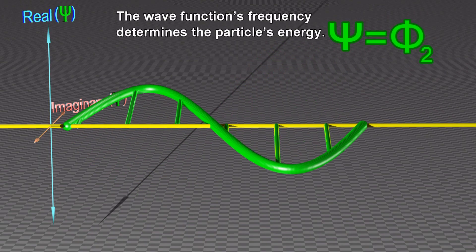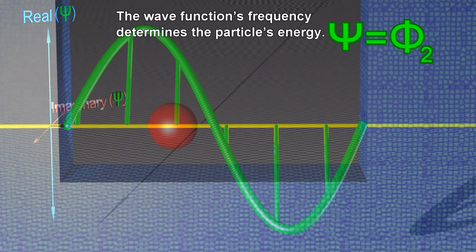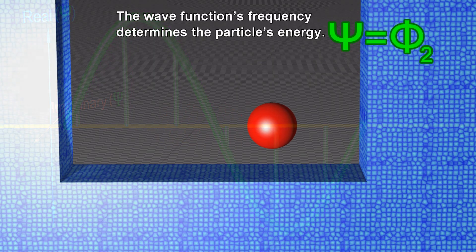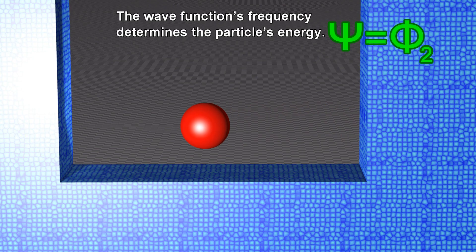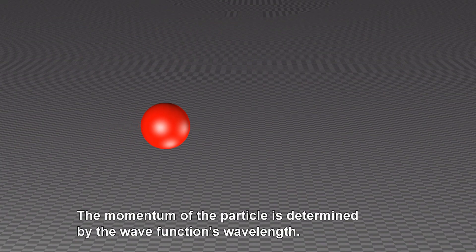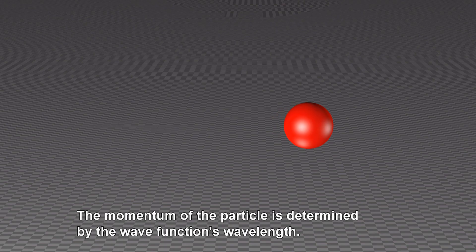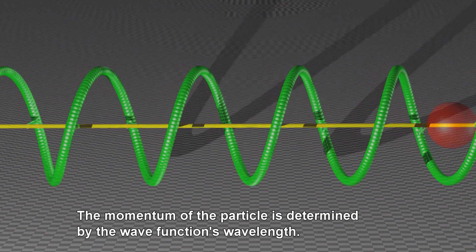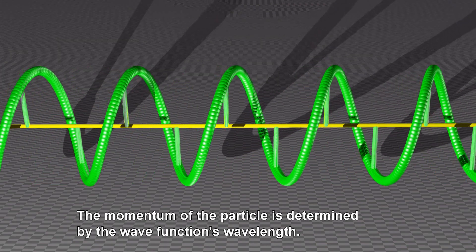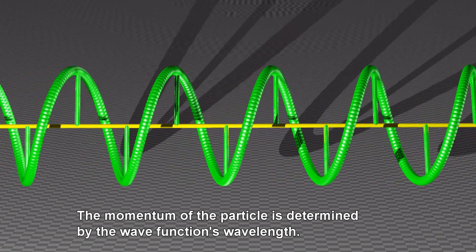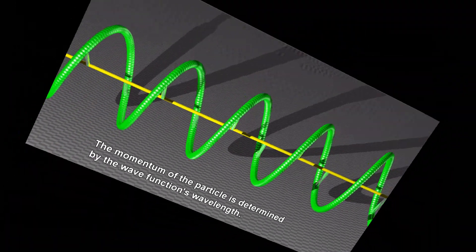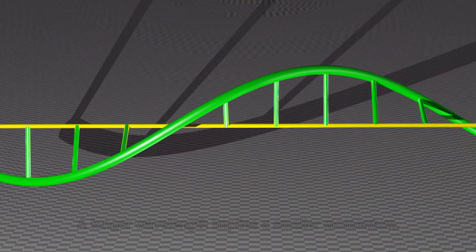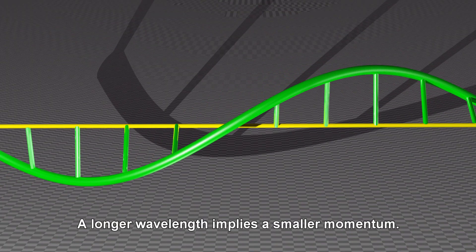The wave function's frequency determines the particle's energy. The momentum of the particle is determined by the wave function's wavelength. A longer wavelength implies a smaller momentum.